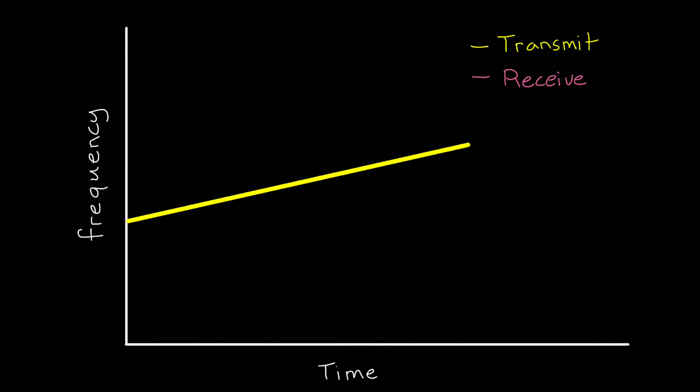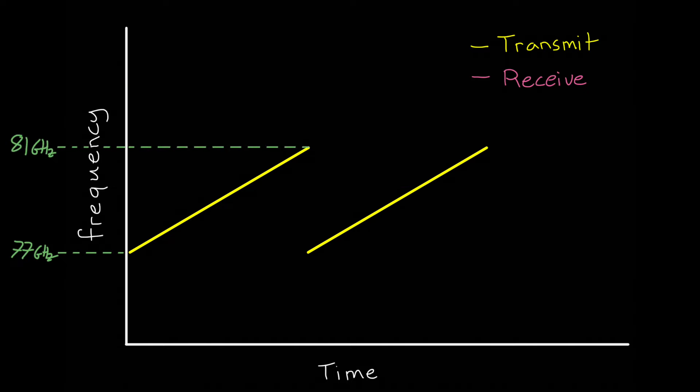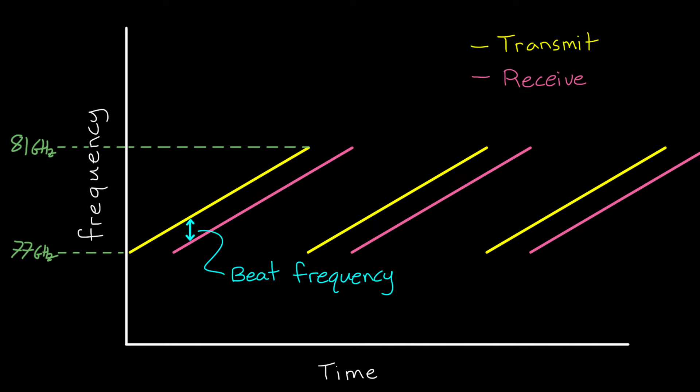For example, with linear frequency modulation, we essentially ramp the transmit frequency from some value, like 77 gigahertz, up to another one, like 81 gigahertz. And we do this over and over again, creating a sawtooth modulation pattern. Now, when the received signal is delayed in time, we do get two different frequencies at any given moment, and hence a beat that can be measured.